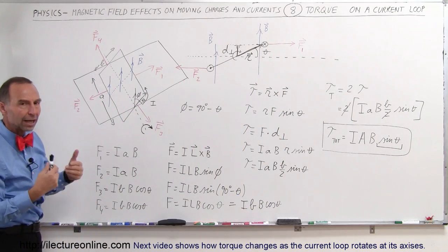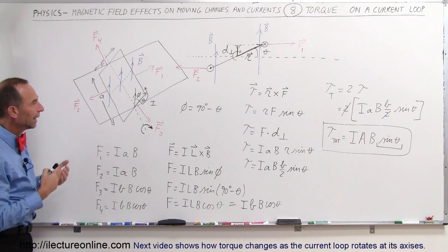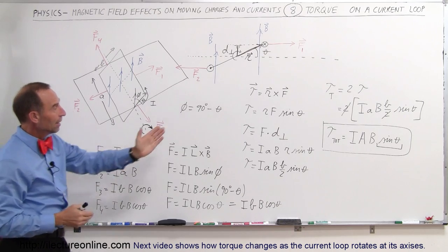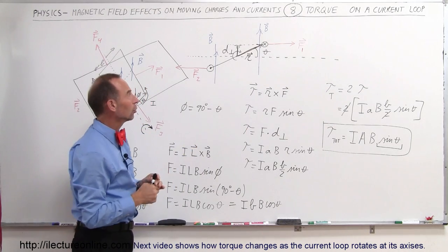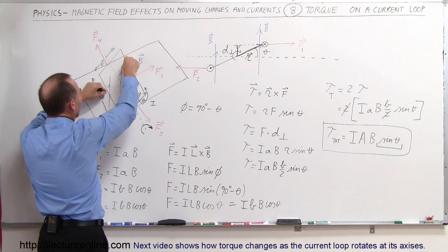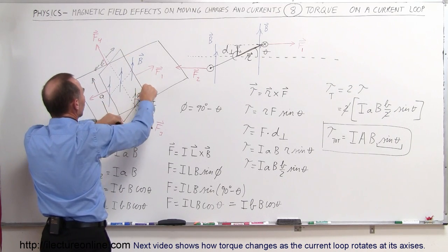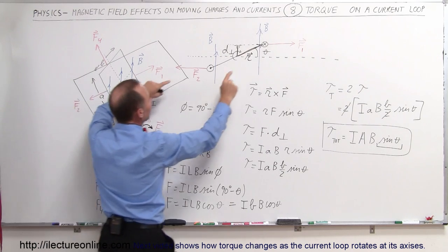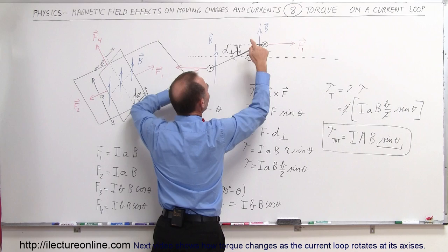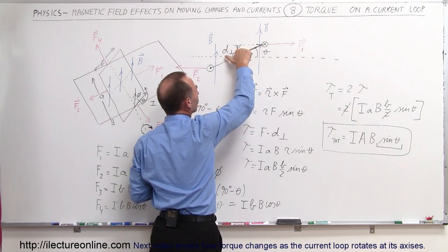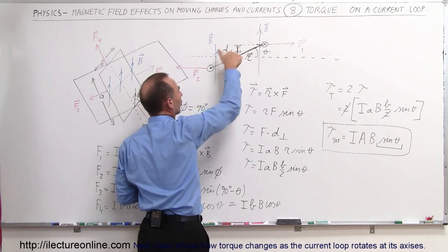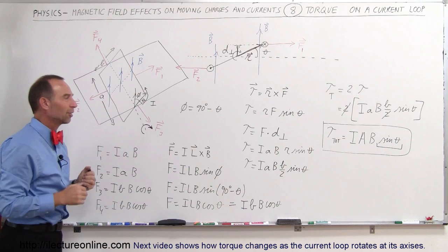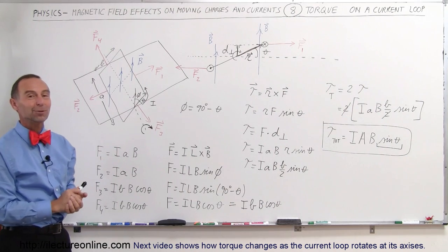We've now calculated the total force on the loop, which is zero, and the total torque on the loop. The only two sides of the loop that give torque are these two sides. They're equal in magnitude with forces in opposite directions, but they both cause a torque in the same direction. This force causes the loop to turn one way, and this force causes the loop to turn that way — so they're additive when it comes to torque, and they cancel each other out when it comes to calculating the total force. That's how we do that.